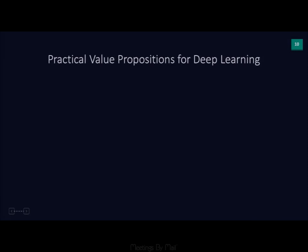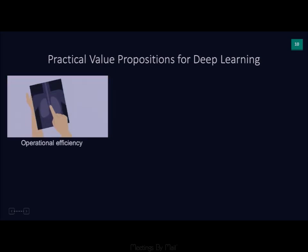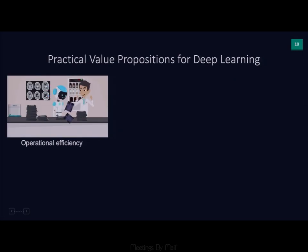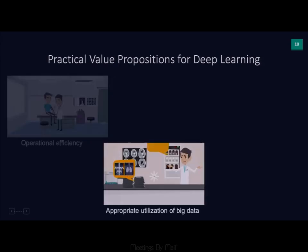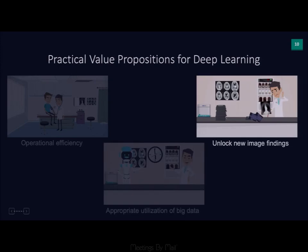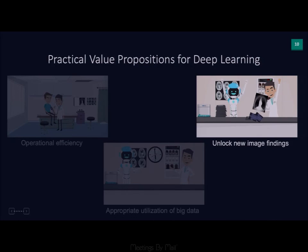There are three practical value propositions for deep learning. First is operational efficiency — having AI get rid of a stack of radiographs that are mostly normal, freeing up the radiologist for more complex tasks. Second is appropriate utilization of big data — we're constantly bombarded with imaging, clinical, and lab data, and AI can help us harness it optimally. Third is unlocking new image findings — there may be prognostic information on images that we're not trained to see.